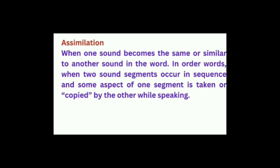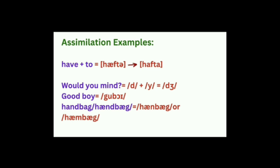Assimilation is when one sound becomes the same or similar to another sound in the word. In other words, when two sound segments occur in sequence and some aspect of one segment is copied by another while speaking — there is a copying or mixing of two sounds. For example: 'have to' becomes 'hafta'; 'would you mind' becomes 'wouldja mind'; 'good boy' becomes 'goob boy'; 'handbag' becomes 'hambag'.